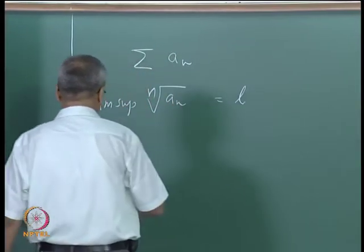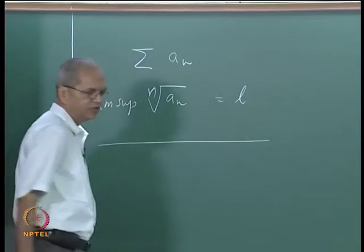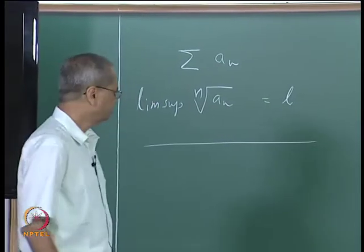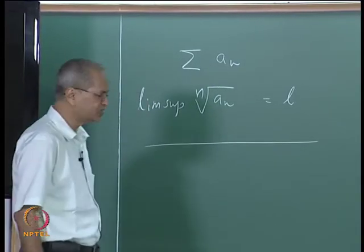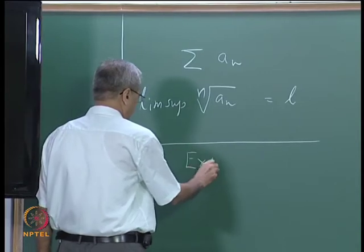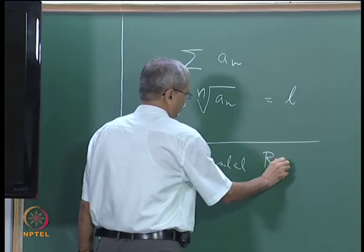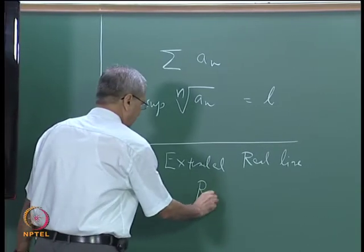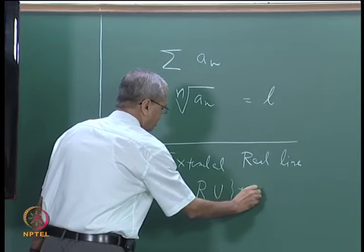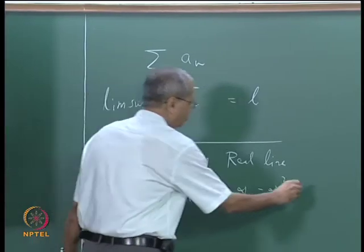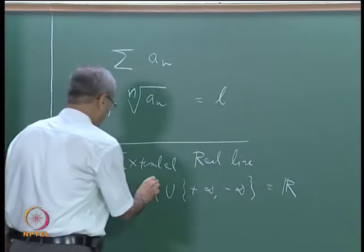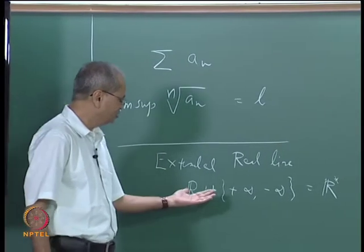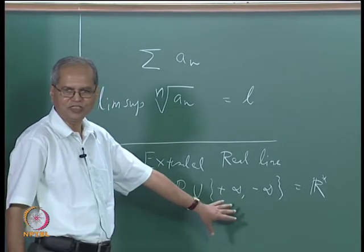In connection with series of non-negative terms, there is one more thing required. Till now we have been talking about real numbers and the real number system, but for discussing convergence or divergence of a series it is also convenient to discuss what is called the extended real line. The extended real line means nothing but the usual real line along with two symbols, plus infinity and minus infinity. Some books denote it as R*. There are certain properties associated with these symbols.